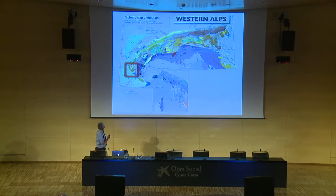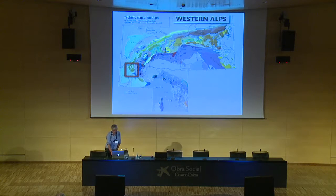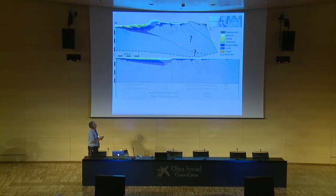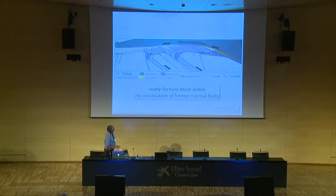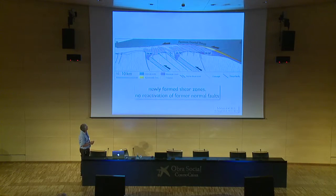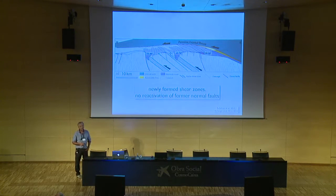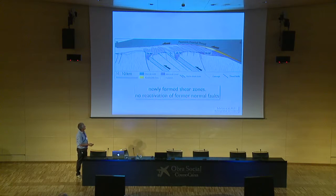Starting with the Western Alps — specifically the external crystalline massif, particularly the Pellevaux-Oisans massif where Mathieu Bélanger did his PhD. This is a Variscan basement massif that has been shortened during the Alpine orogeny, resulting from the shortening of the former passive margin of Europe. The shortening is not great — something like 30%. A cross-section shows very strong deformation in the sedimentary cover and formation of new compressional reverse shear zones in the basement. Those shear zones do not reactivate the former normal faults — they are oblique on them — and they are localized by the presence of the former half-grabens, with no reactivation of former normal faults.